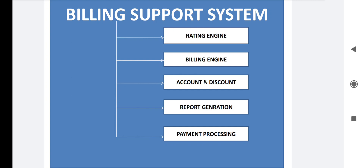Report generation mainly focuses on generating reports related to the financial or sales performance of a particular telecom operator. For a company, if you want to analyze the financial status, these reports are very useful. There are different types of reports — financial reports and management reports — which mainly focus on whatever revenue is generated by the company.